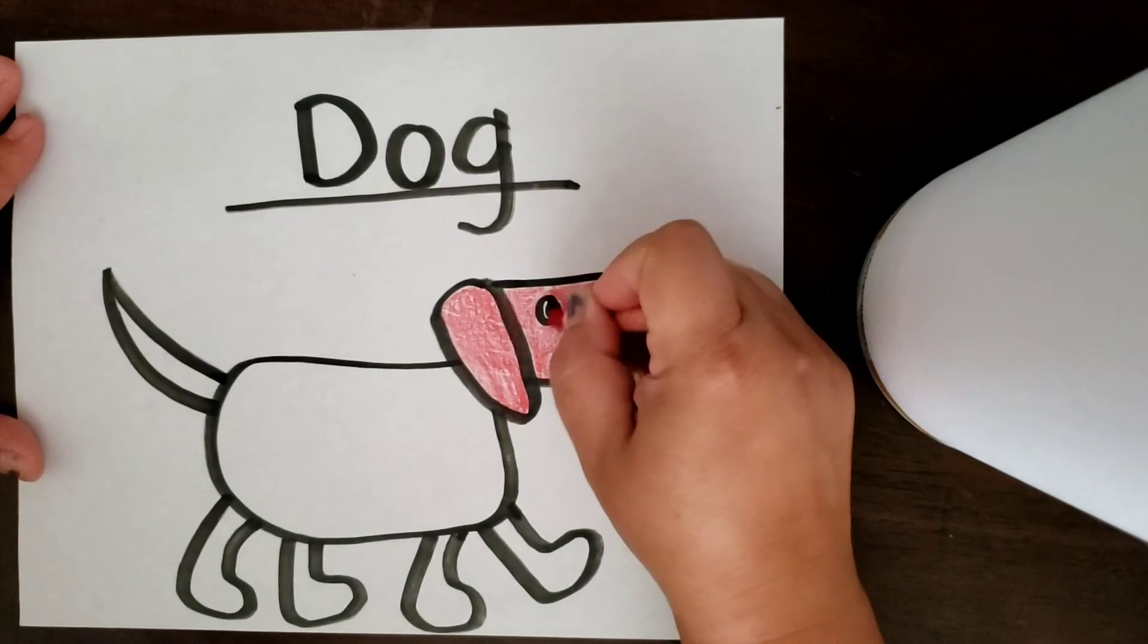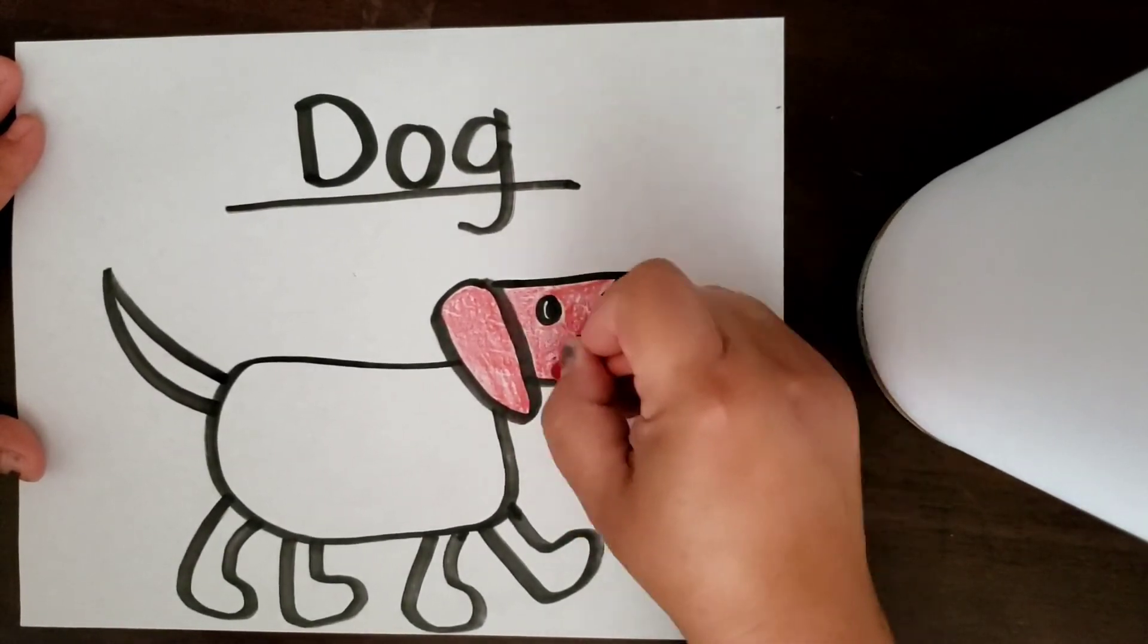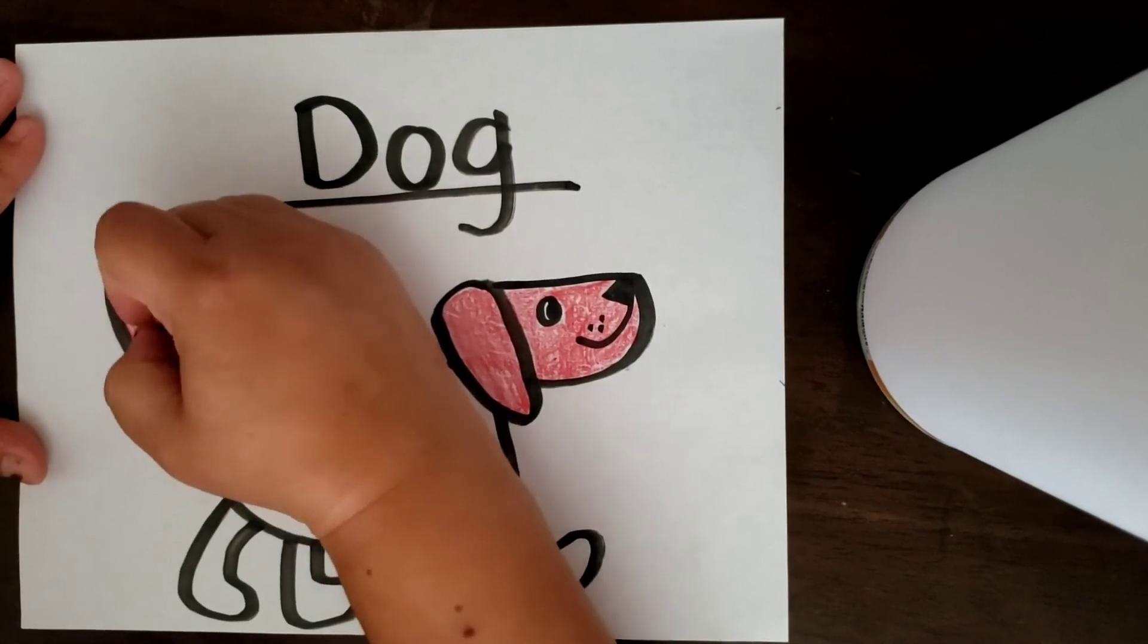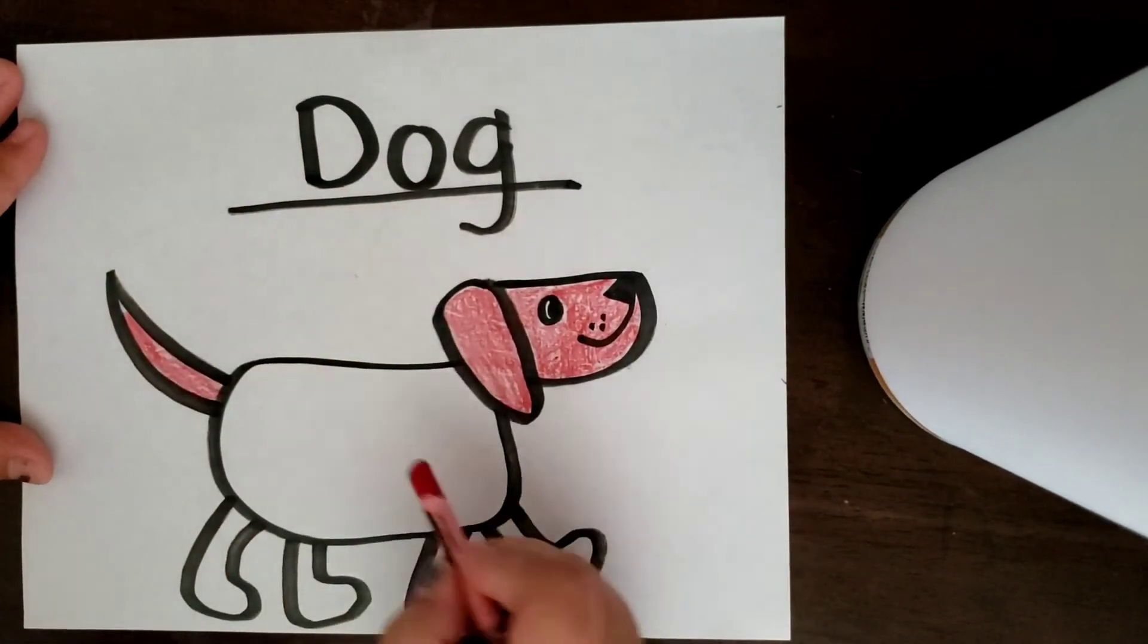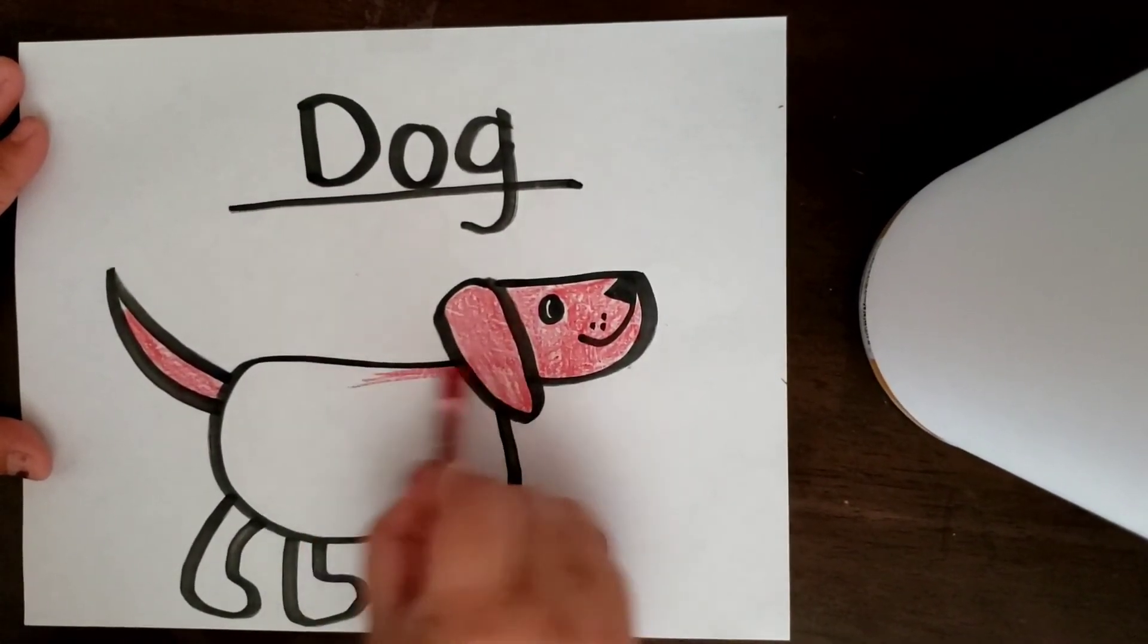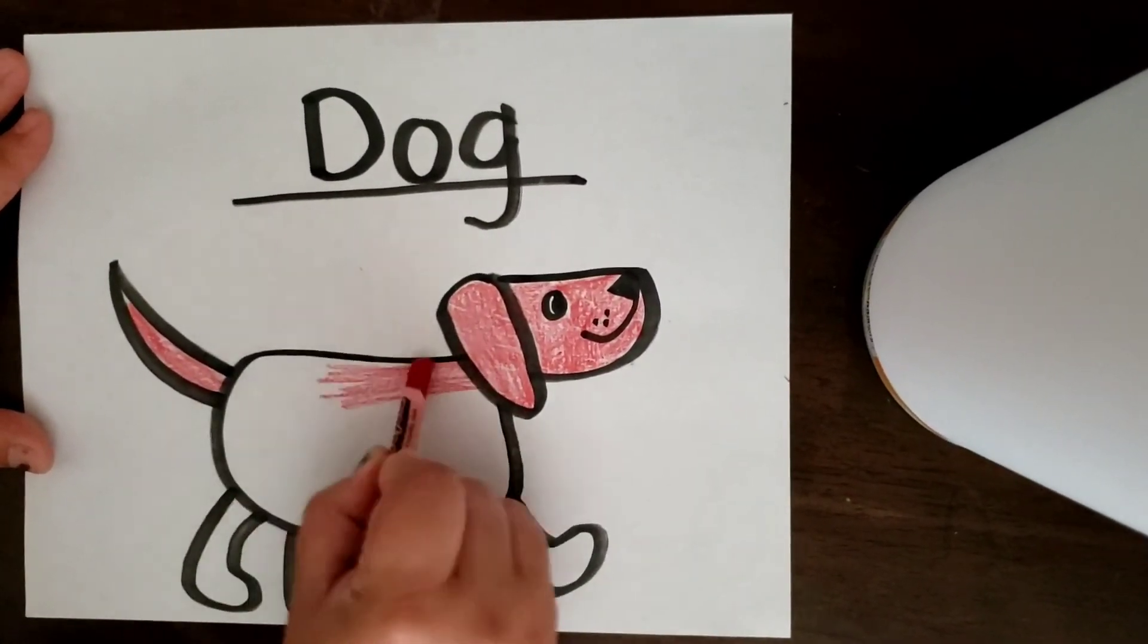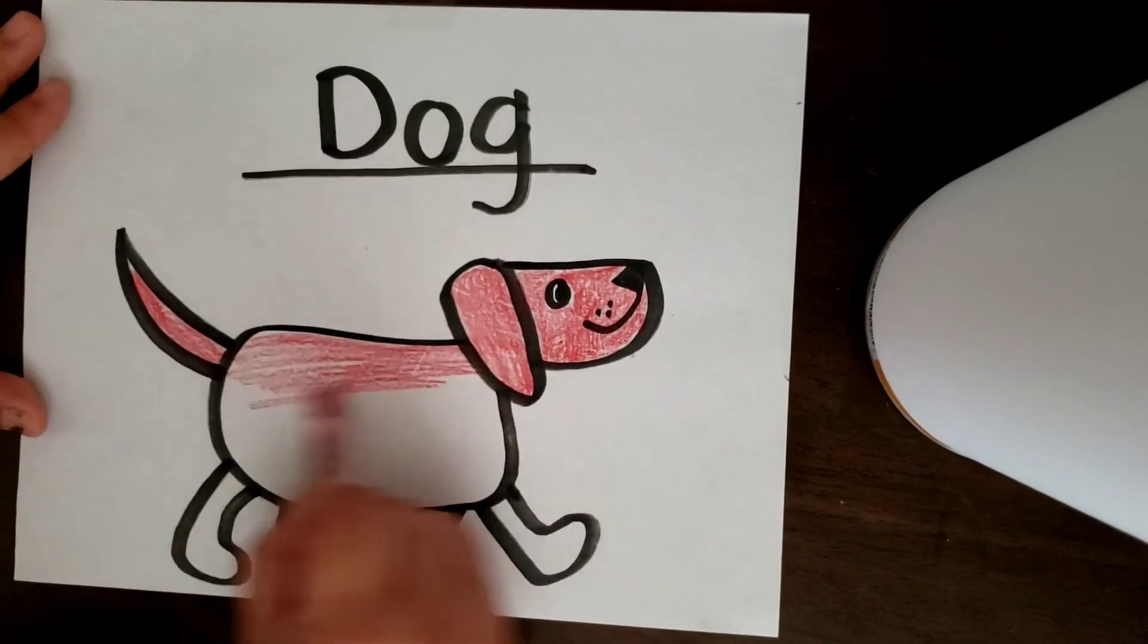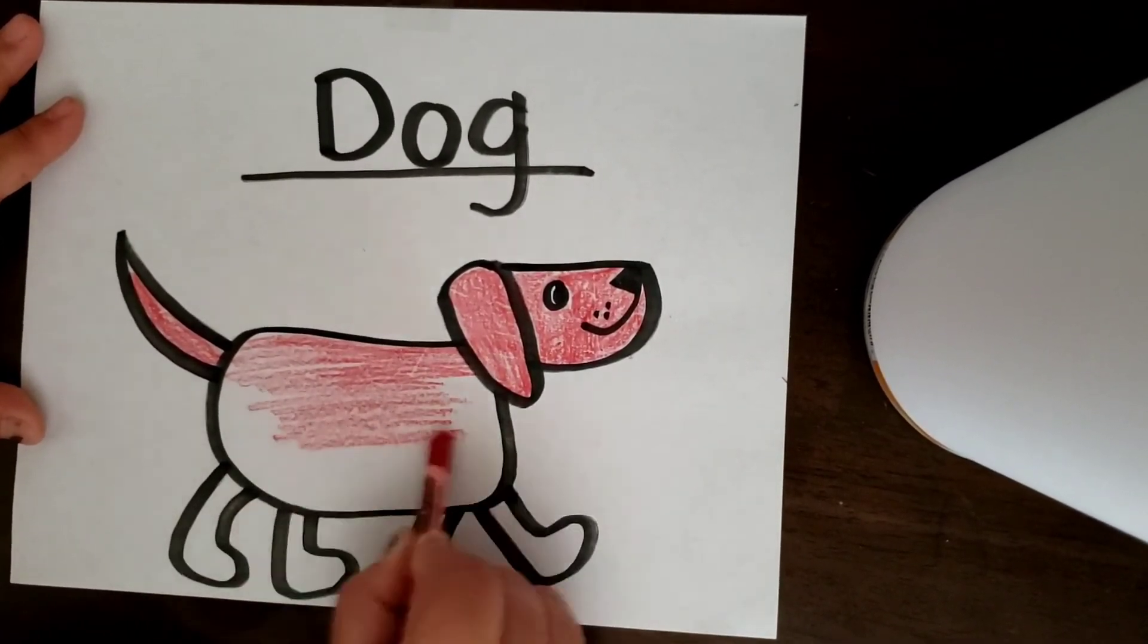maybe add a ball that your dog can fetch. So you can grab any color crayon or marker and draw a ball in the front.